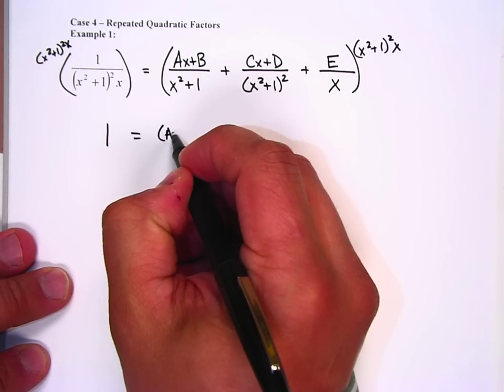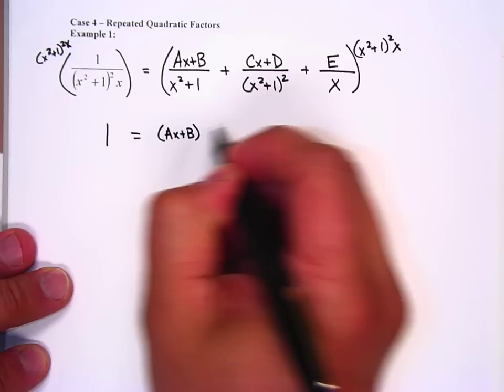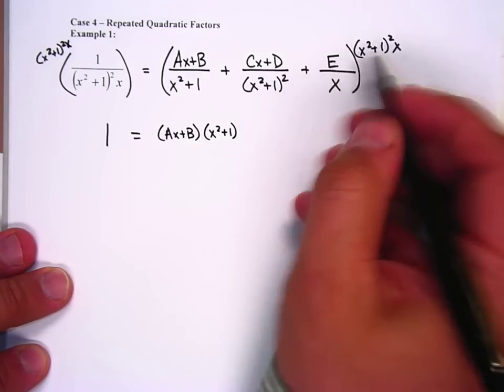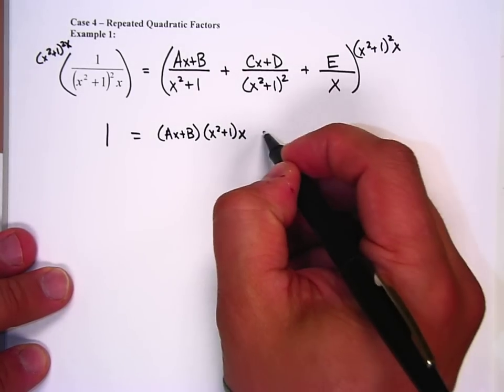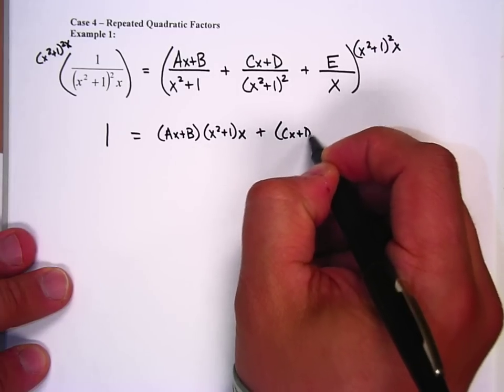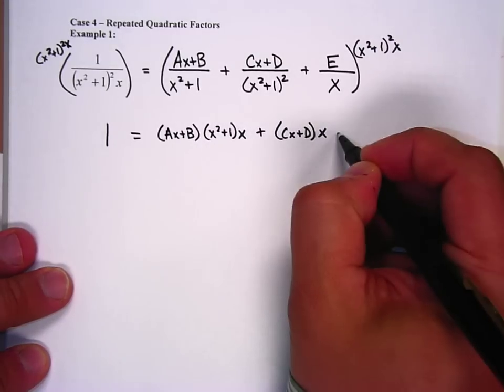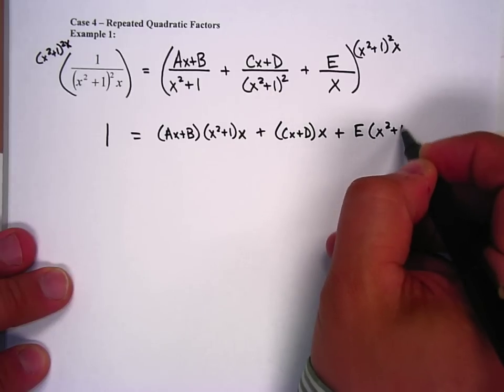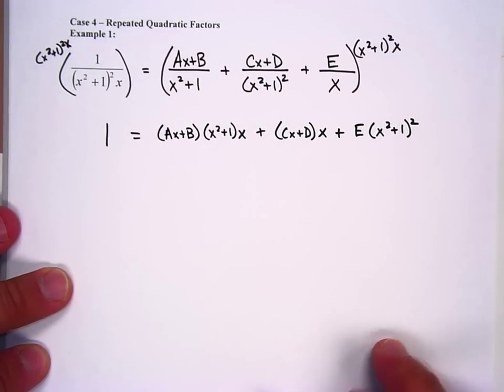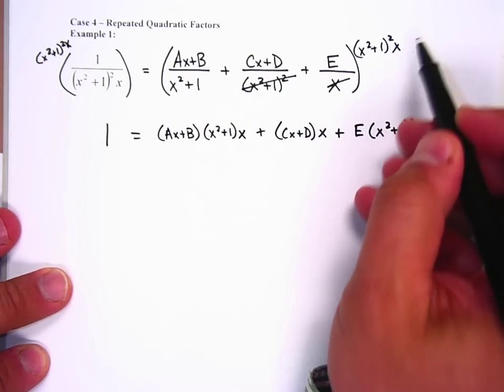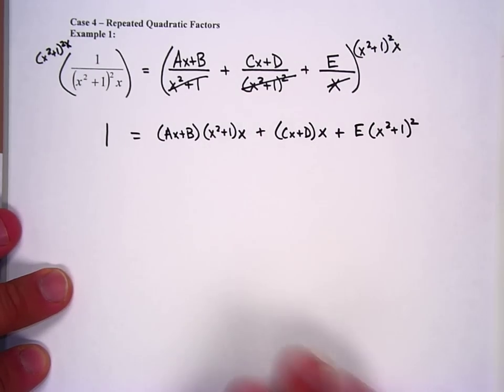On the right, we're going to get (ax plus b) times, there's one (x squared plus 1), it gets canceled. The other one we've got to multiply by times x plus, we have (cx plus d) times x plus E times (x squared plus 1) squared. Here, that whole thing canceled out with that, here the x is canceled, and here it canceled with one of them.